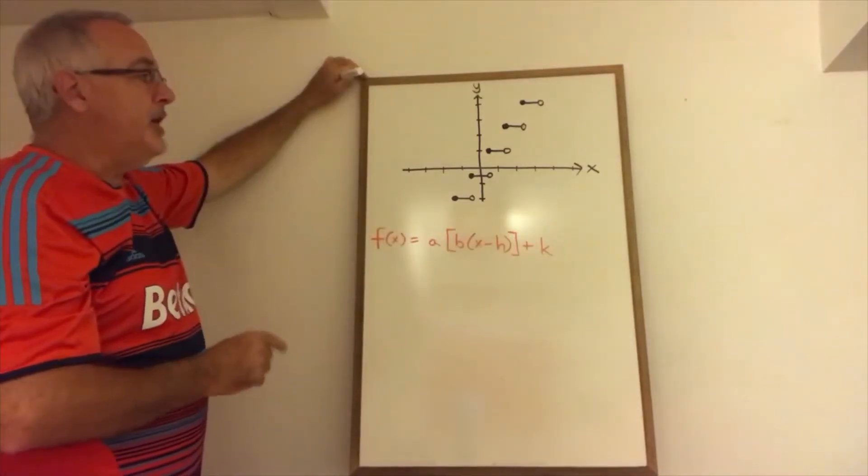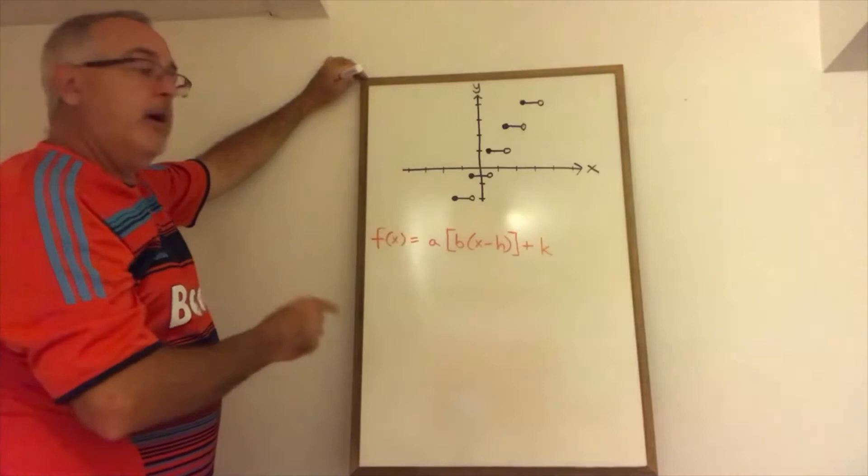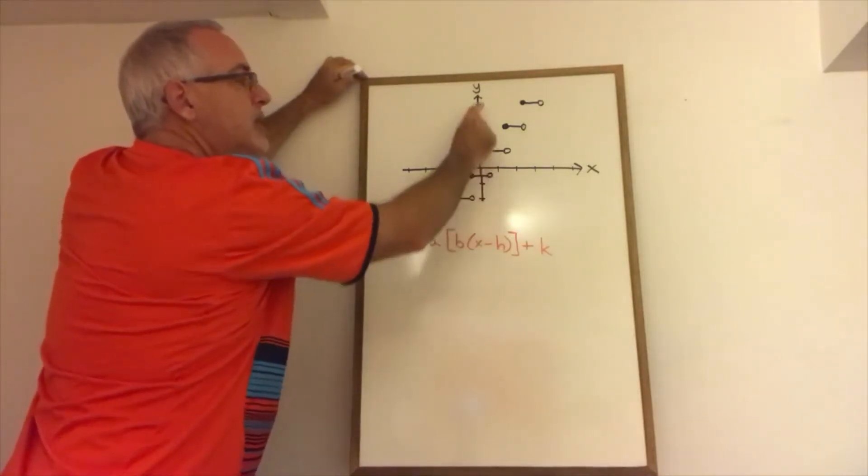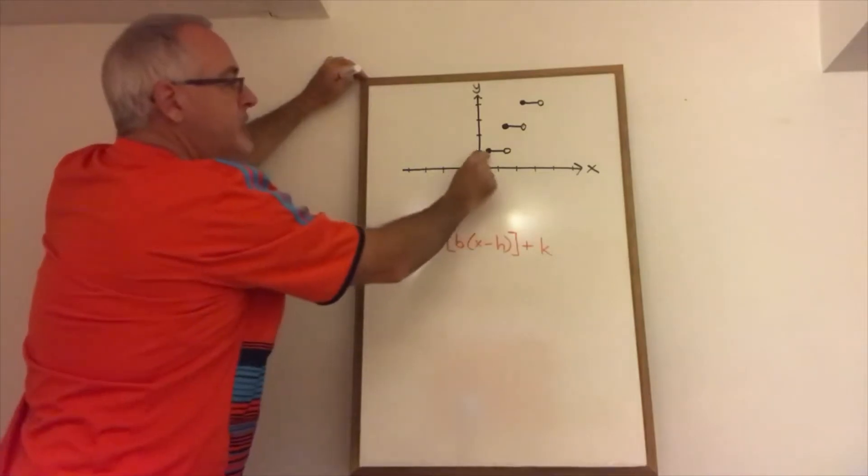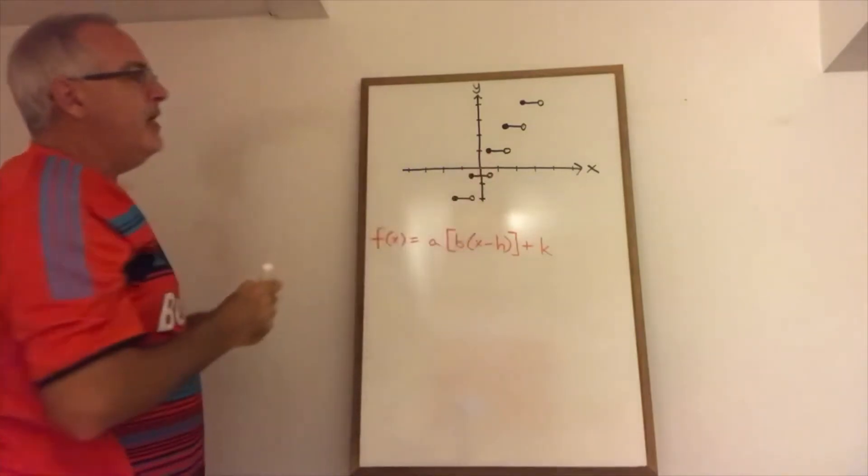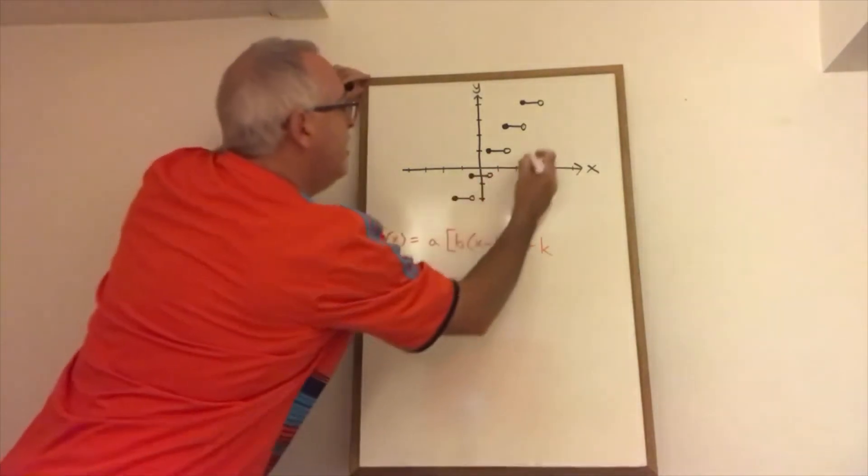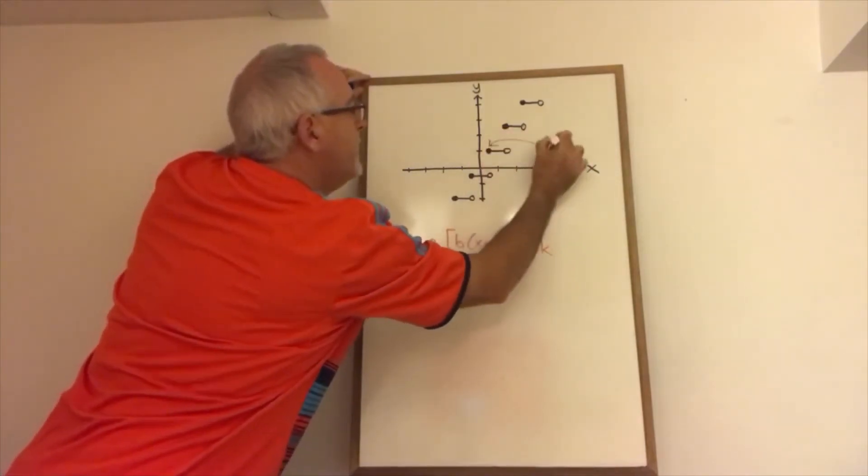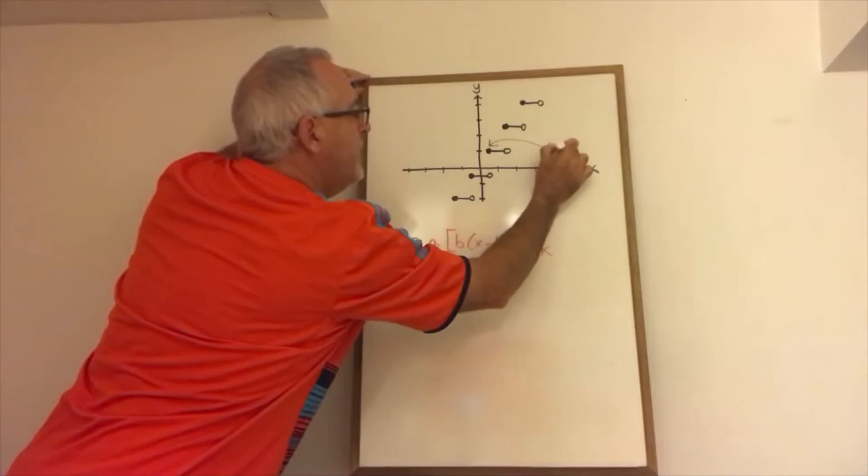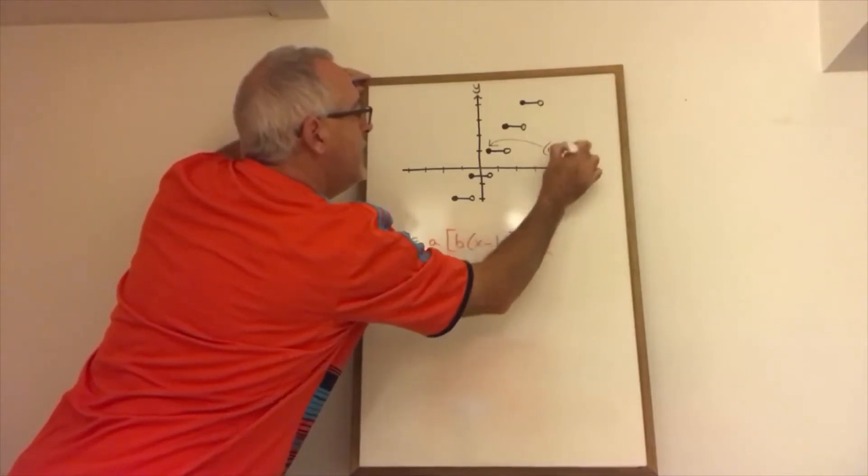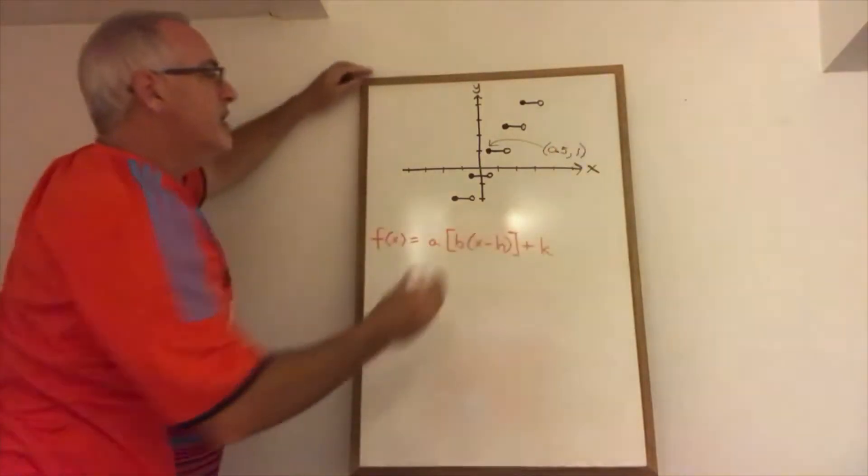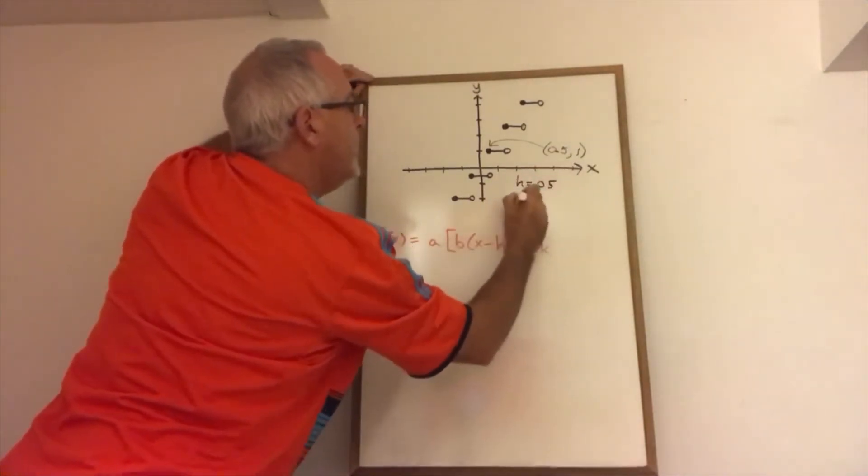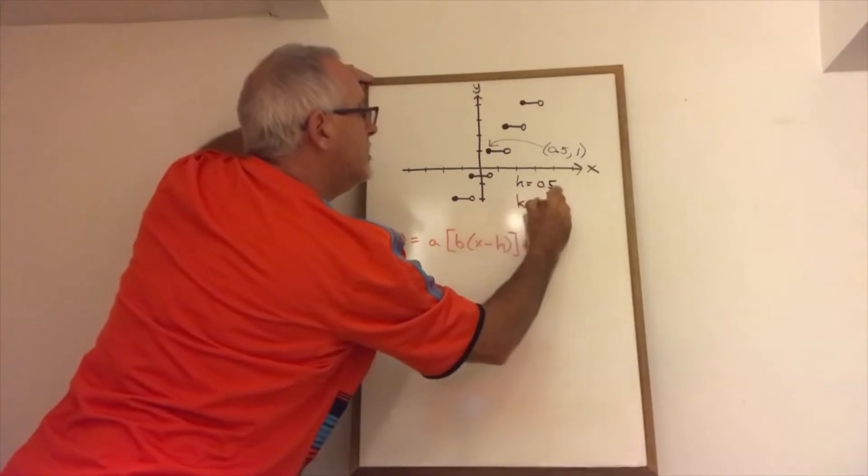The first thing I'm going to do is find h and k and to do that I find a closed circle and I choose a closed circle that's close to the y-axis. So I'm choosing this one. And the coordinates of that point are 0.5 and 1. So therefore, h equals 0.5 and k equals 1.